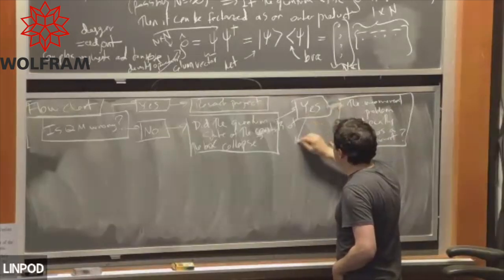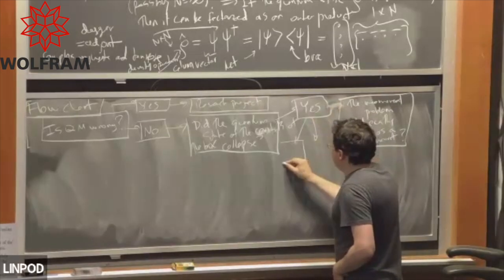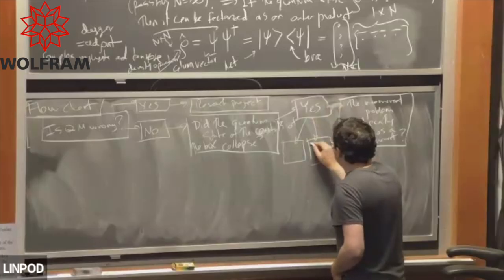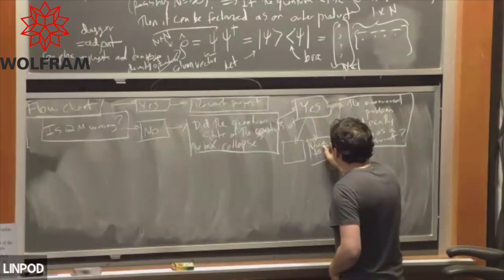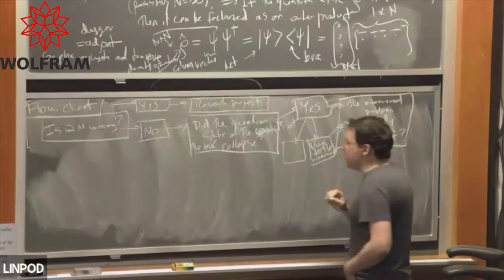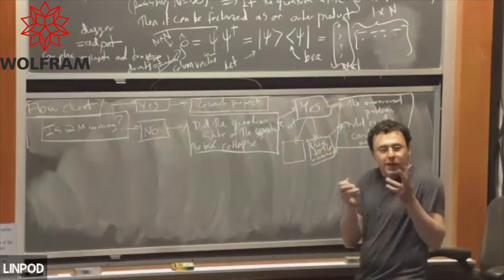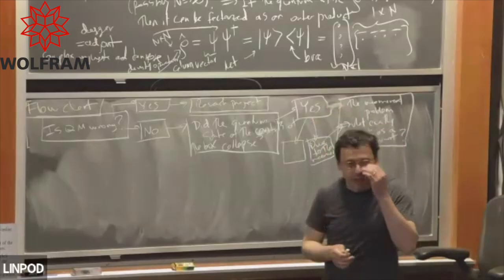Then we have to do this ambiguity problem, and this is called the measurement problem. What exactly counts as a measurement? Well, this is actually a little bit too quick. This isn't quite right. We actually have a question that comes out first. Was it due to the measurement? Is the collapse due to the measurement?